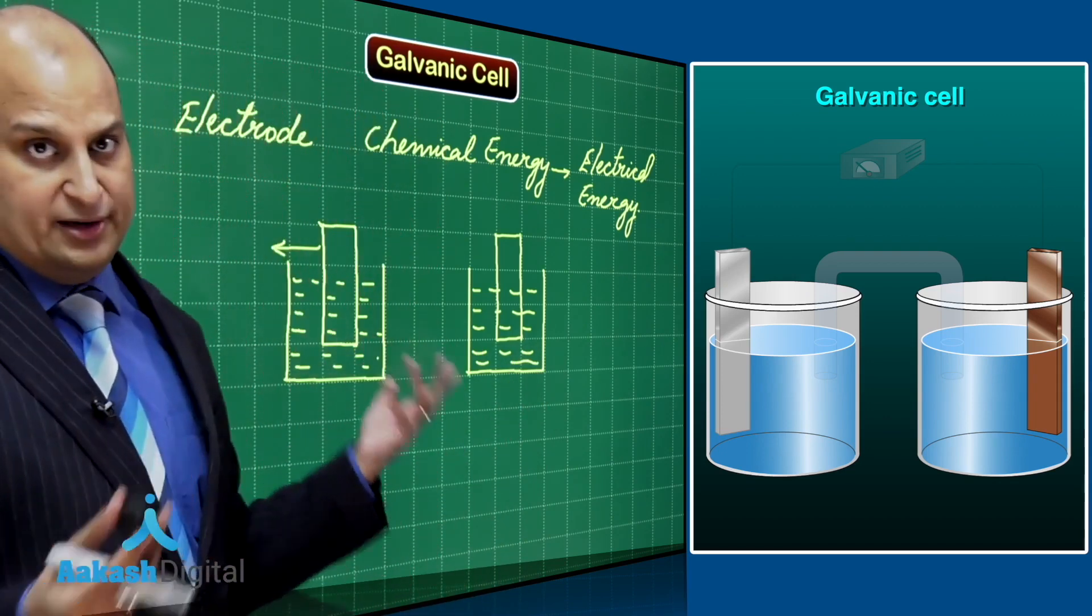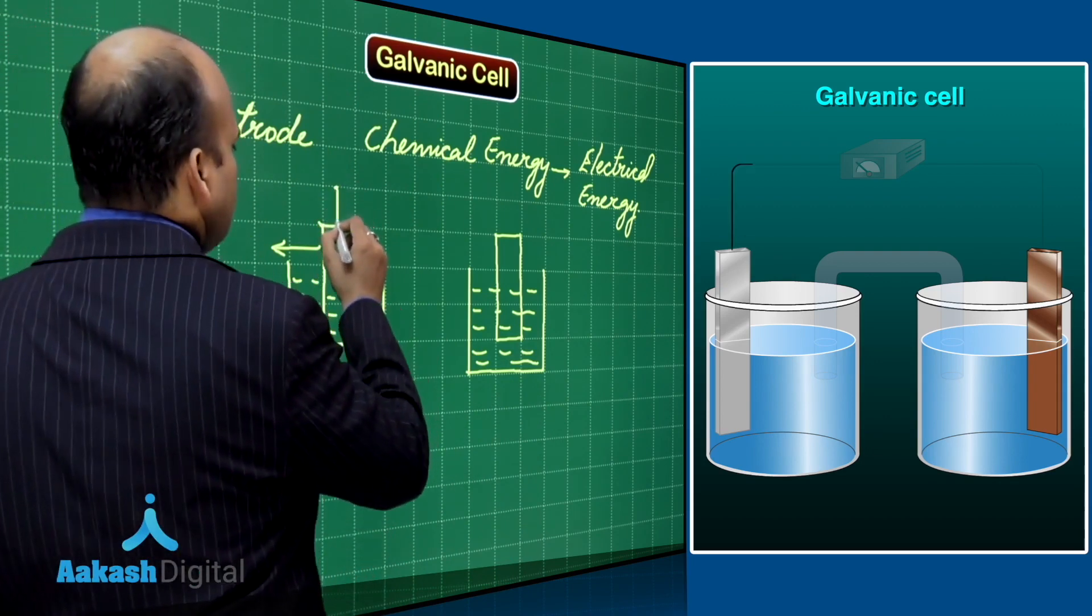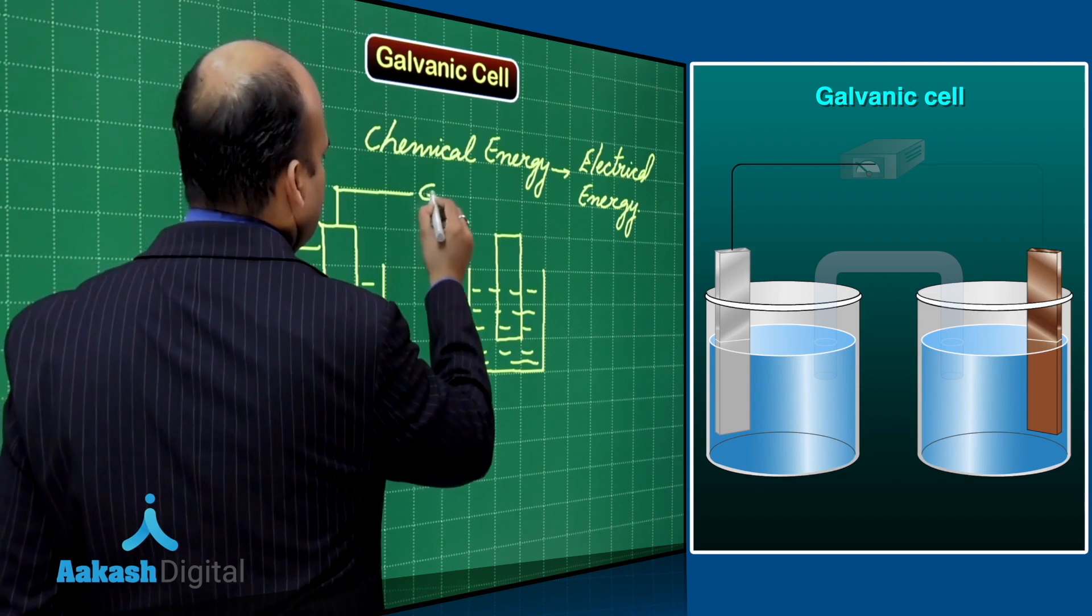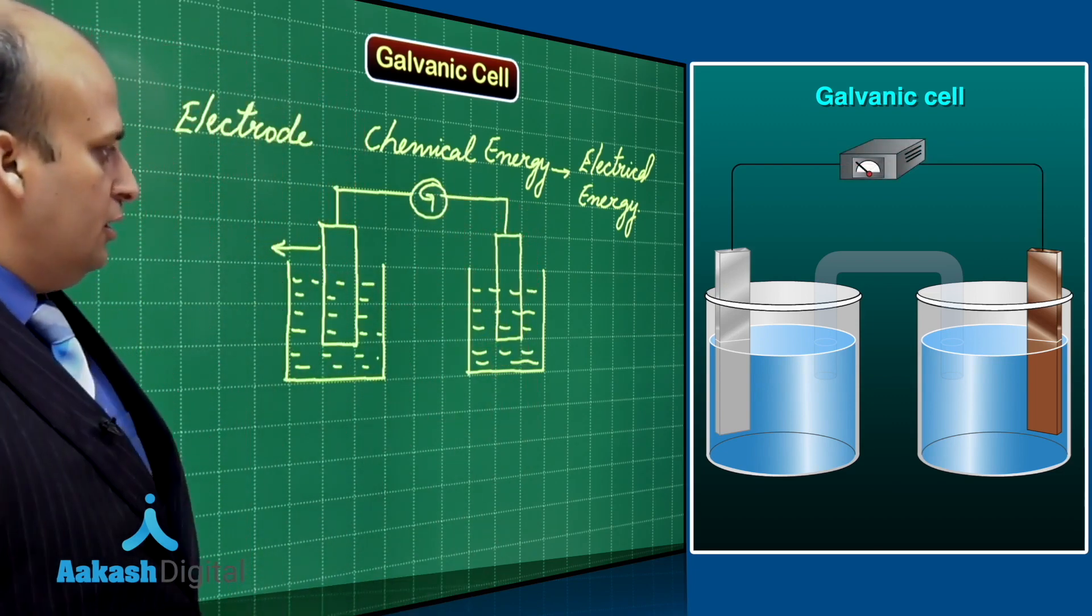Now, you would be asking me, sir, what is the difference between the two rods? I will tell you. How do I look at this particular apparatus? First of all, you will say, sir, it is not connected. These are two discrete devices. So, let us connect them. First connection is through an external wire in which a galvanometer is connected for taking the reading.